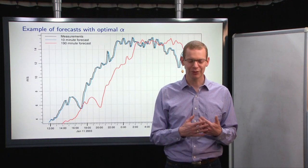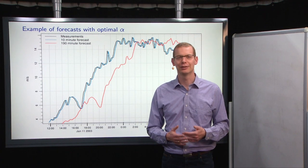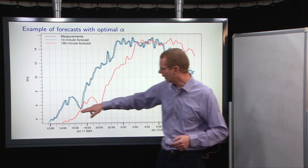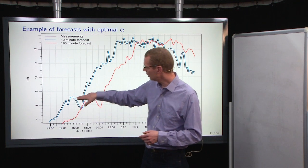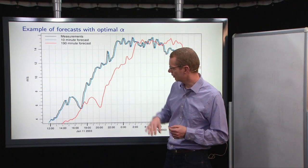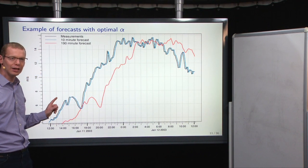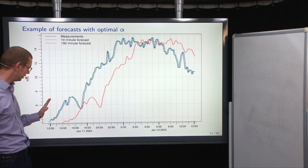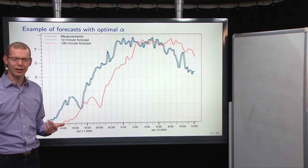If we then look at how this actually performs, then at first you may be a little bit surprised, because what you see here, the black line are the actual measurements, the blue is the 10-minute prediction, and the red is the 190-minute prediction. So what it seems to be is that you've just shifted the blue curve a little bit. But remember, we use an alpha of 0.95.